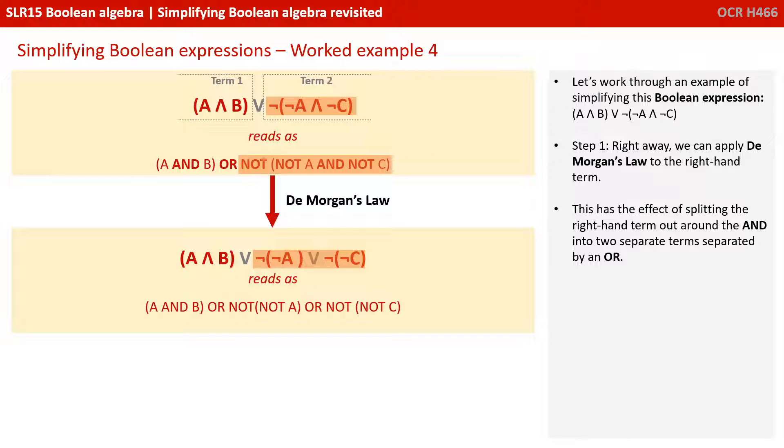So our first step here is to apply De Morgan's law to the right hand term, the second term. And this has the effect of splitting the right hand term out around the AND into two separate simpler terms with an OR.